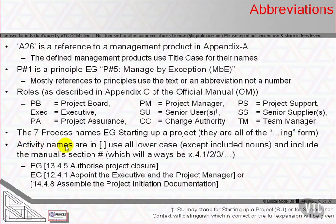Activity names are enclosed in square brackets and are all lower case, except where they include a proper noun. So, for example, 'appoint the Executive' — the Executive being the name of a role — uses an uppercase expression in the name.